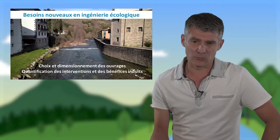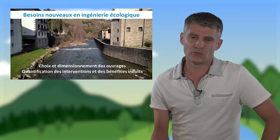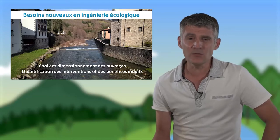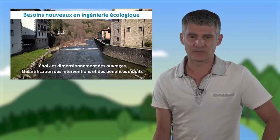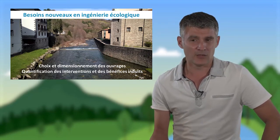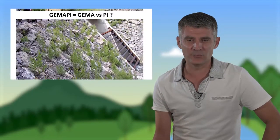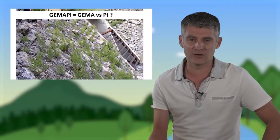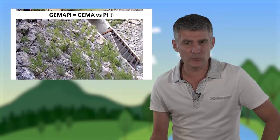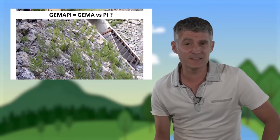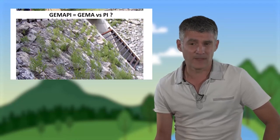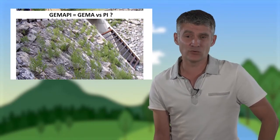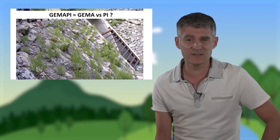On pourrait aussi se demander s'il n'y aurait pas moyen de recourir à un cours d'eau moins linéaire, pour lui donner un fonctionnement plus naturel. On cherche donc un certain équilibre dans les interventions pour concilier la GEMA et la PI. Mais cet équilibre n'est pas forcément évident à trouver : par exemple, des végétaux intégrés dans un enrochement peuvent-ils déstructurer l'ouvrage via leurs systèmes racinaires ? Les spécialistes de la gestion des digues savent bien qu'on cherche en général à éviter les arbres et certains types de ligneux sur les digues, car ils sont en mesure de les déstabiliser.